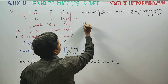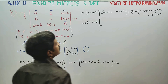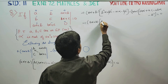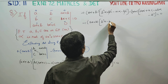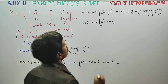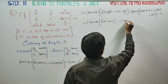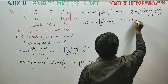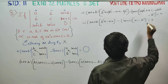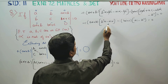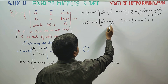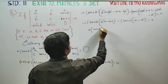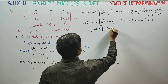Then, collecting terms with (a·alpha + b): we get ab·alpha minus ac·alpha. Factoring out common terms, we arrive at (a·alpha + b) into (b² minus ac) equals zero.